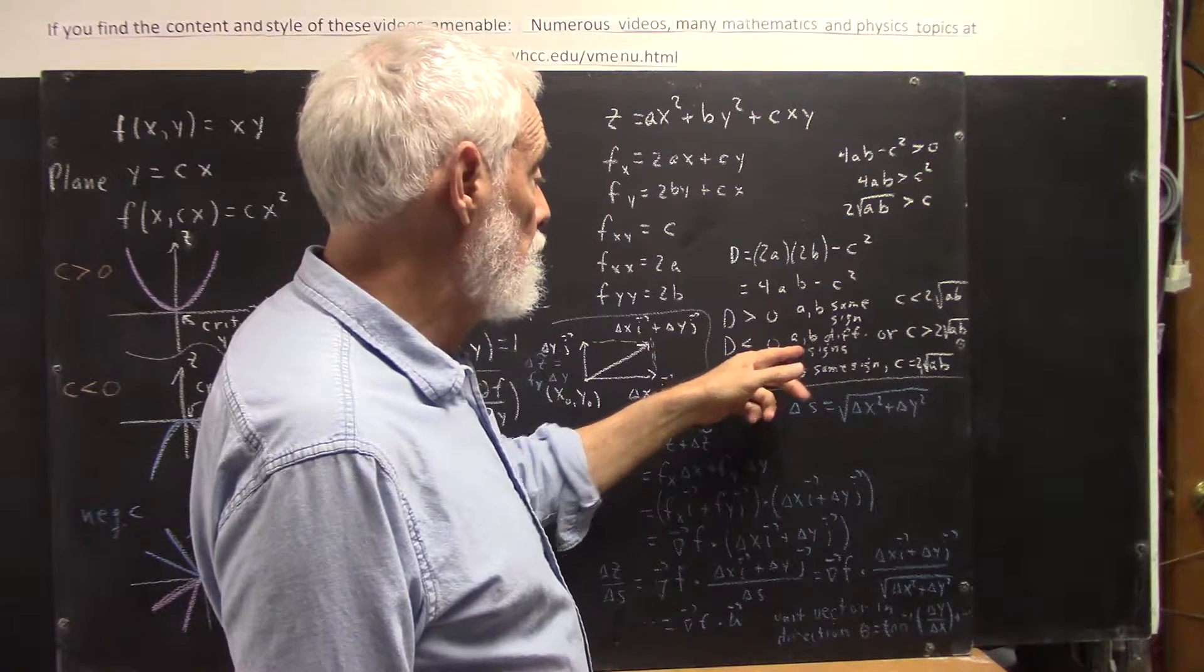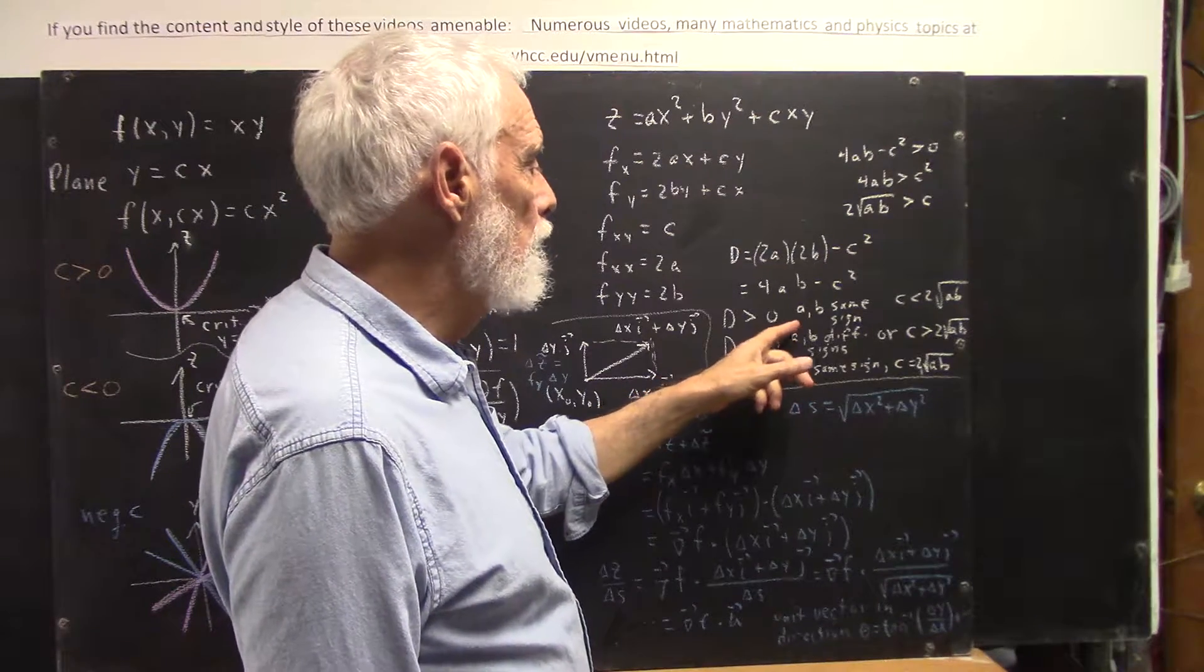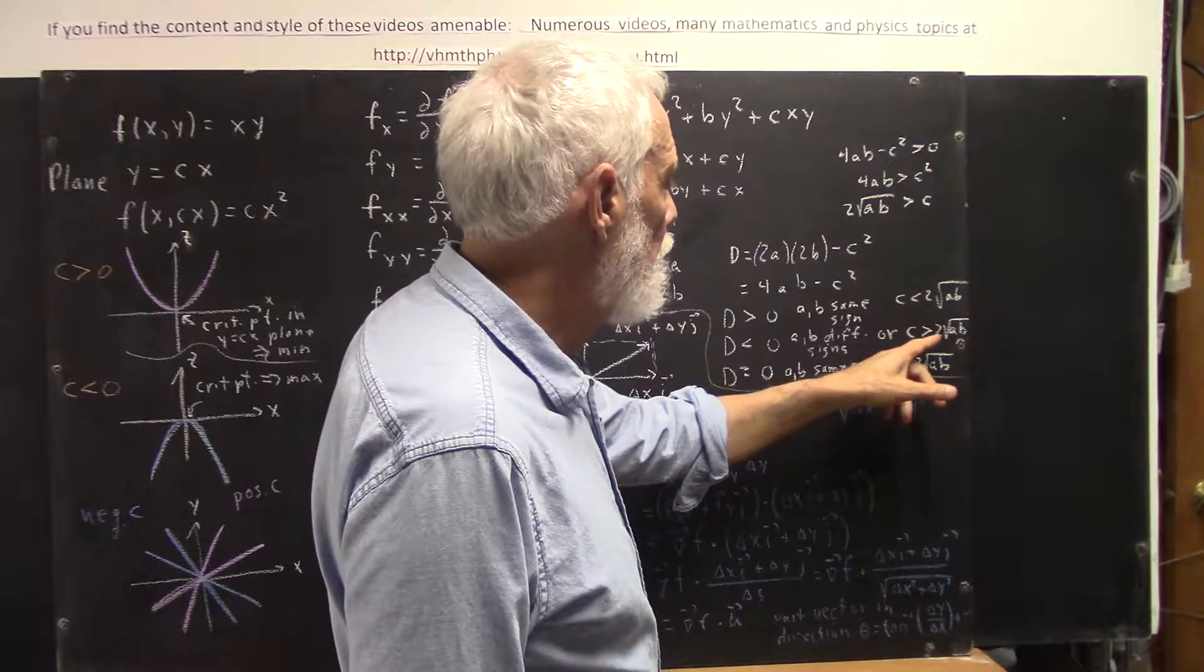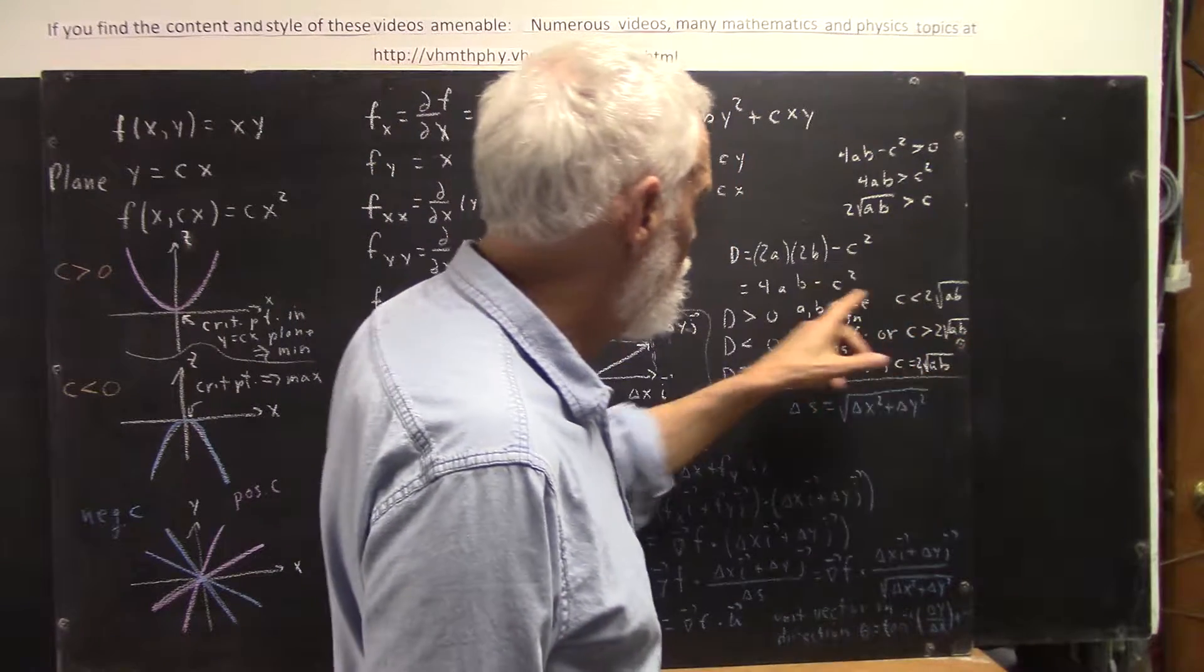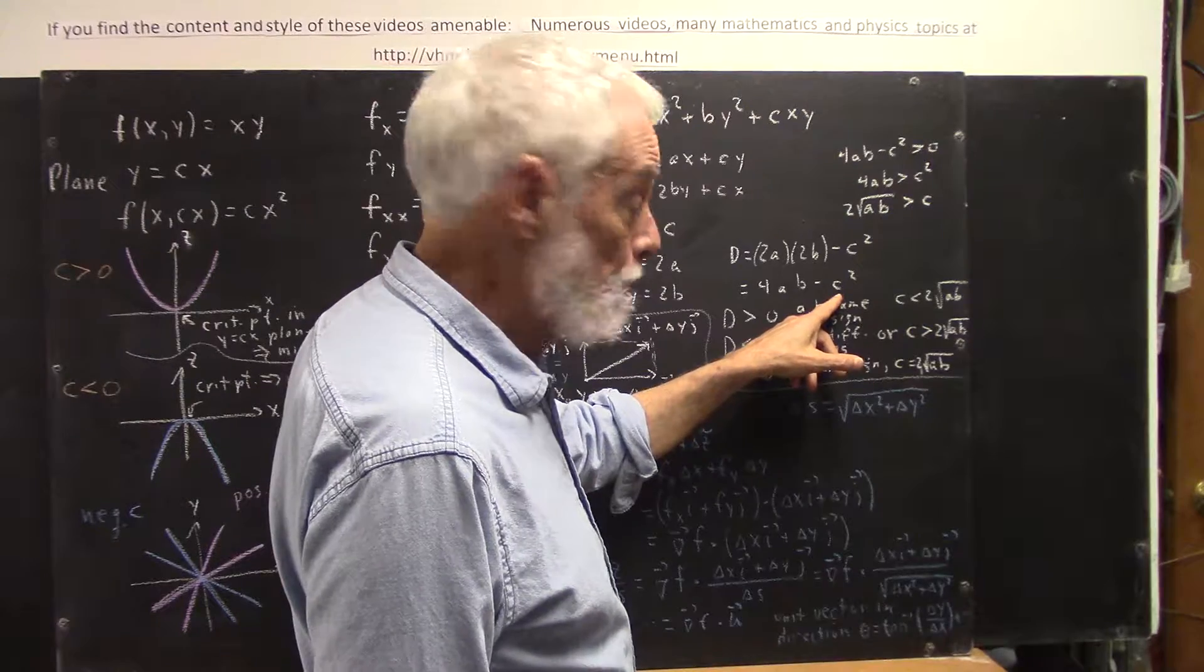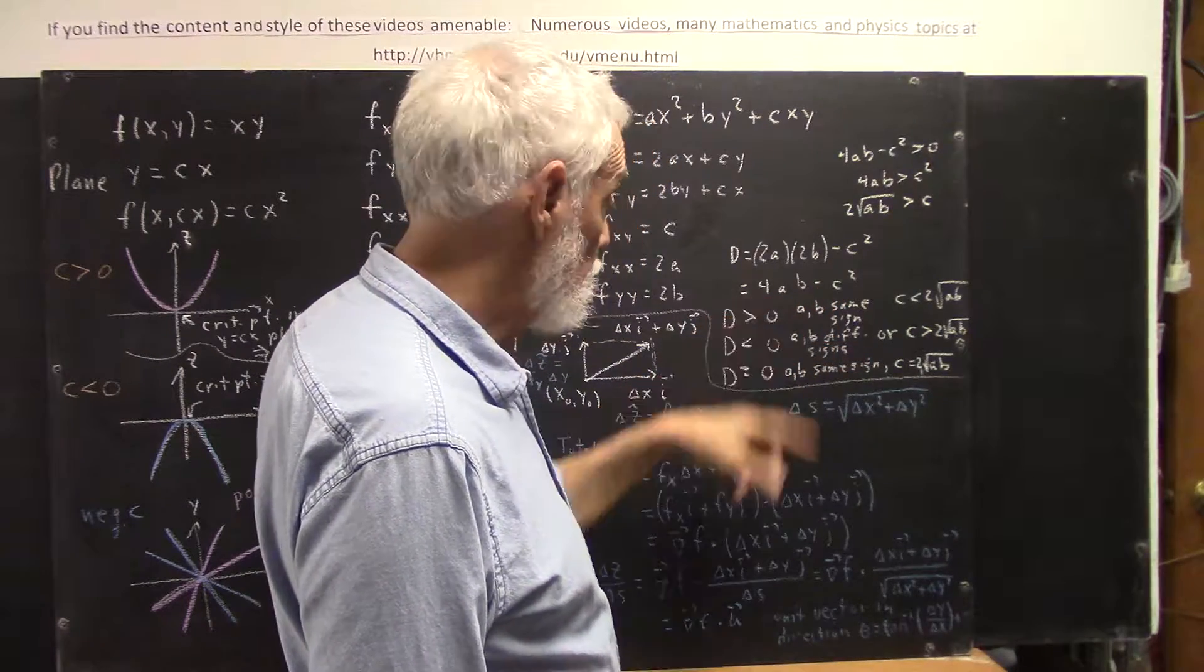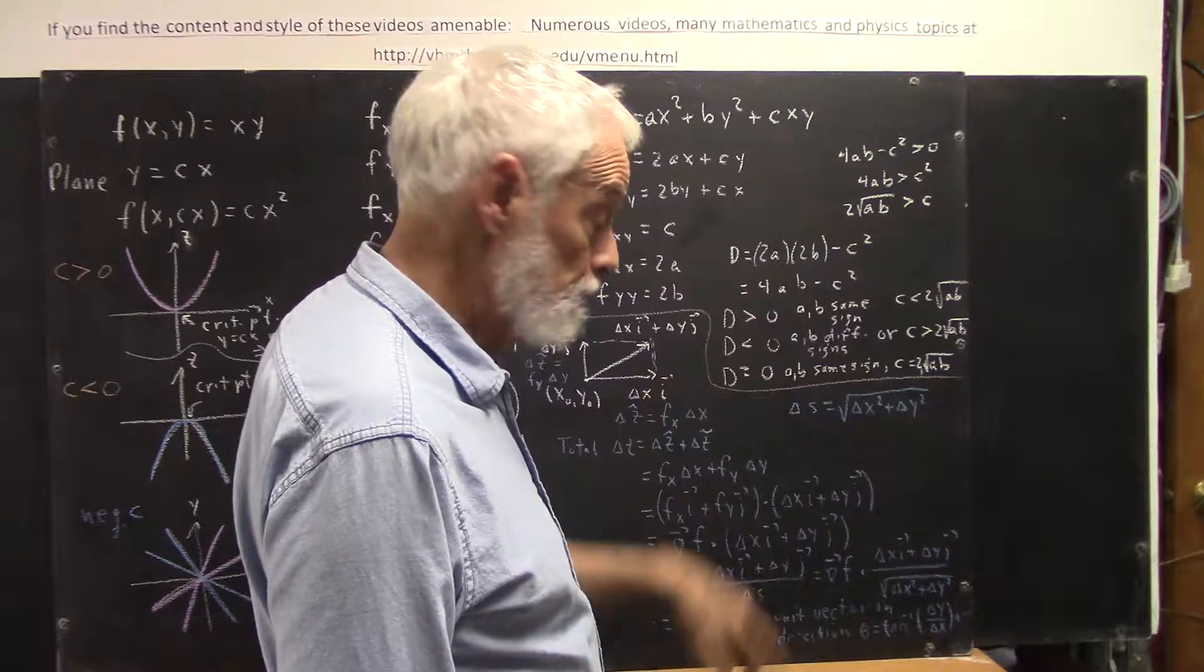So if d is less than 0, if a and b have different signs, or if c is too big, if it's bigger than 2 square root of ab, then this negative will overcome the positive of your 4ab, even if ab have the same sign.